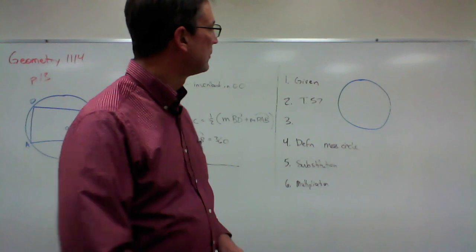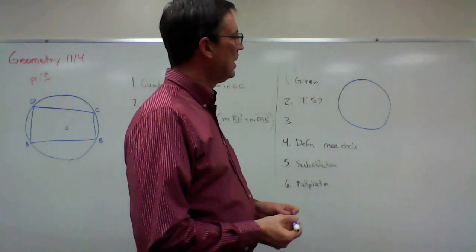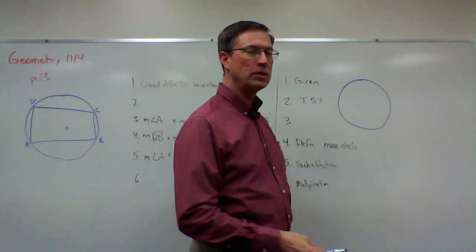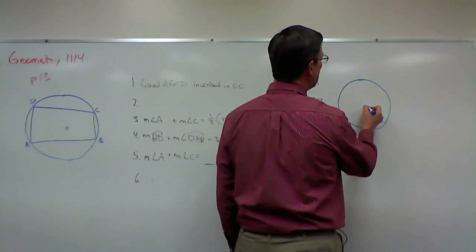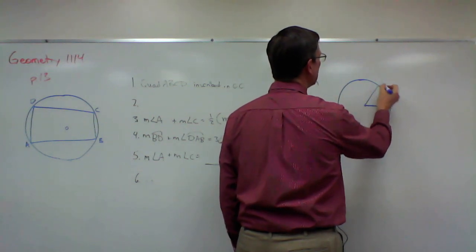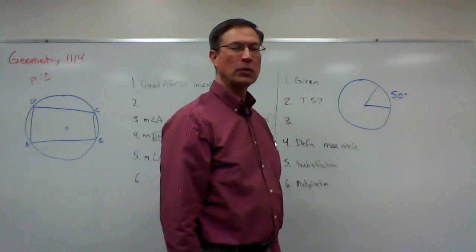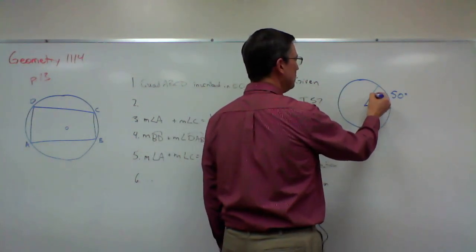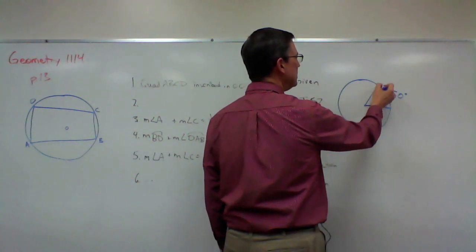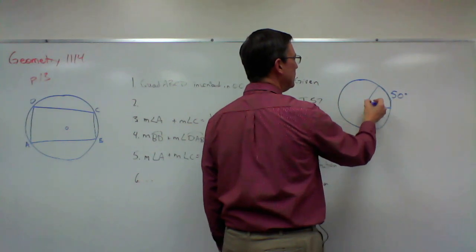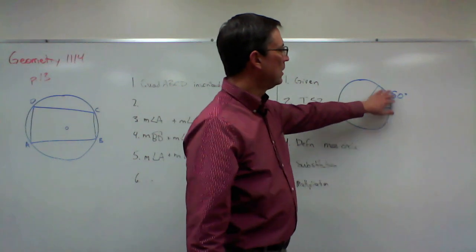Before we get to that, let's talk about the definition of an inscribed angle and how we can determine the number of degrees in that inscribed angle. So I've drawn a triangle here. Here's the center. And if I come over here to the side like this and say that's a 50 degree angle, because it's from the center, and if I measured it with a protractor it would be 50 degrees, that means this arc out here is also 50 degrees. So this is 50 degrees, the central angle, and then the arc is 50 degrees.